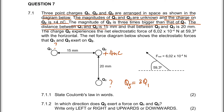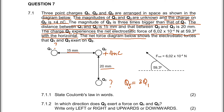The distance between Q2.1 and Q2.2 is 15 millimeters — you have to convert that into meters. And between Q2.1 and Q2.3 is 20 millimeters, which also needs to be converted. Q2.2 experiences a net electrostatic force of 6.02×10⁻⁴ N at a direction of 59.3° with the horizontal, due to Q2.1 and Q2.3.